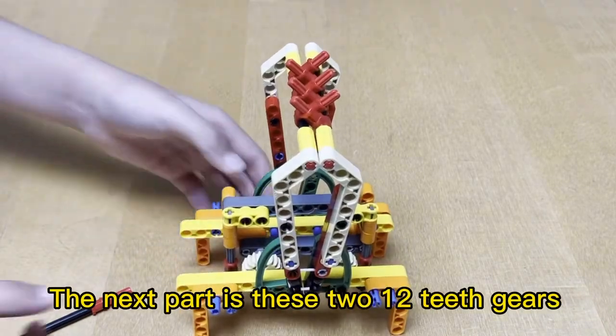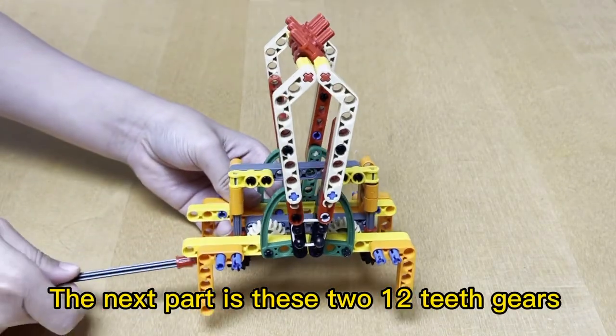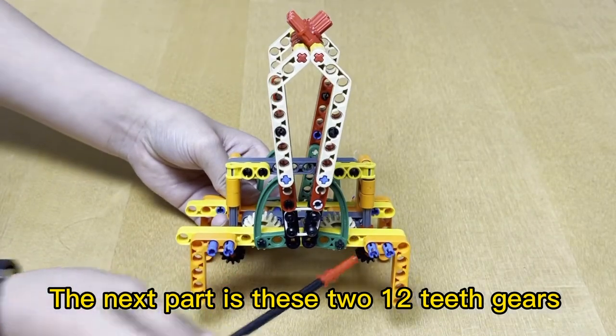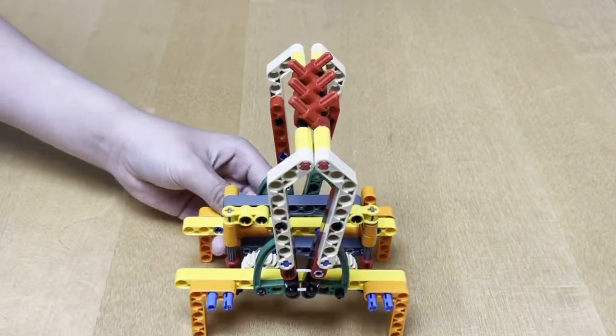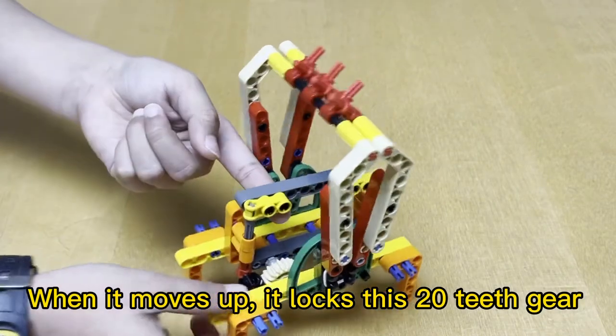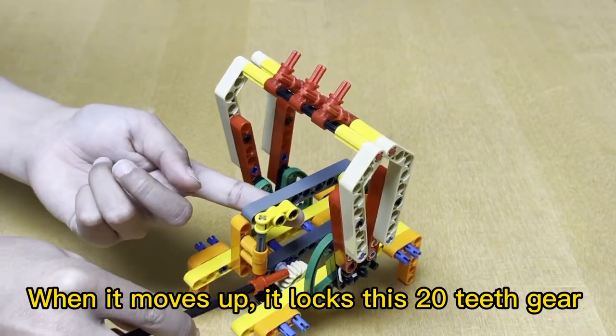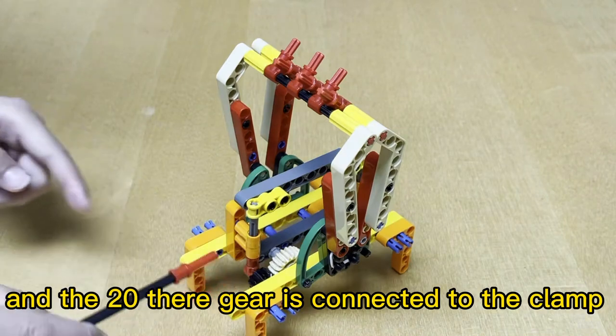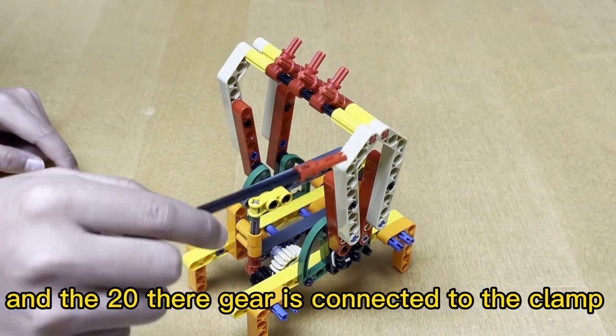The next part is these two 12-teeth gears. When it moves up, it locks this 20-teeth gear, and the 20-teeth gear is connected to the clamp.